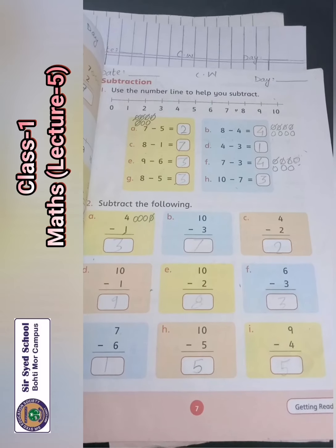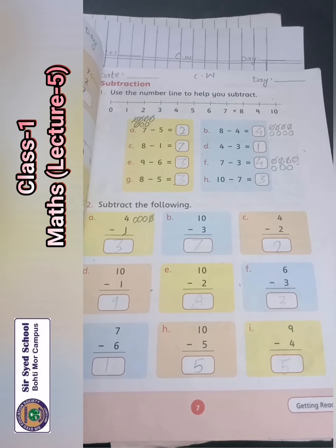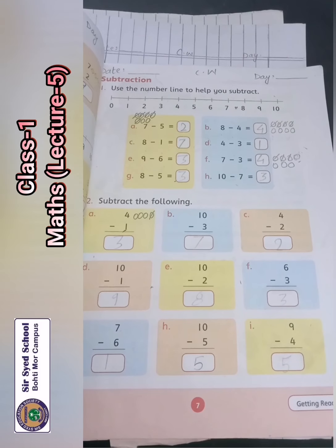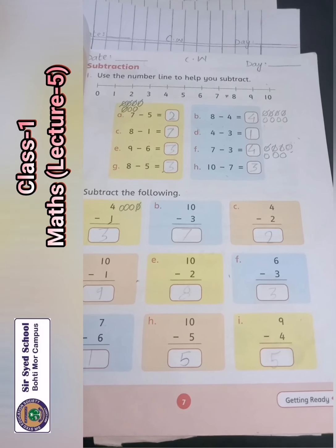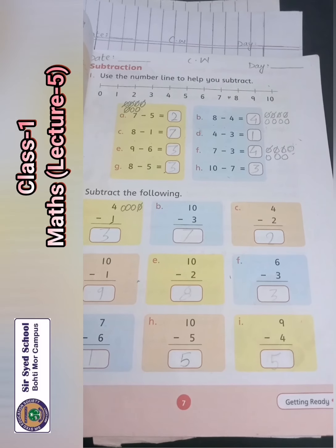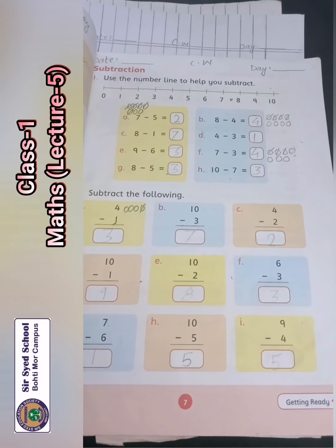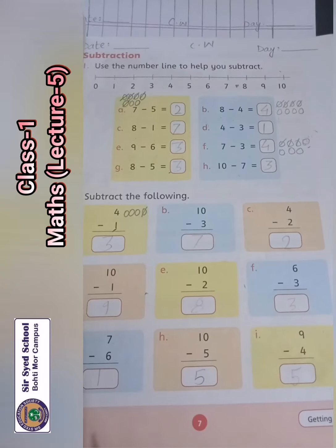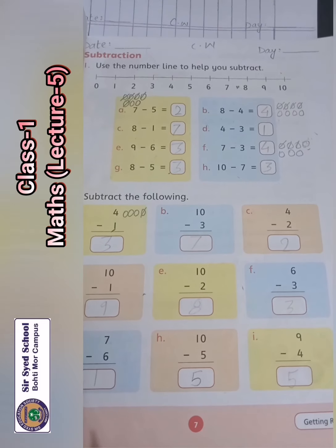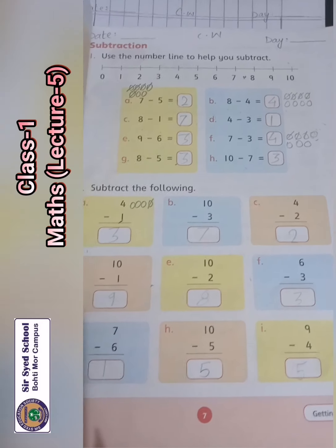10 minus 5, 10 balls, 5 balls. 9 minus 4, 4 balls, 4 balls. Question number 1, question number 2.